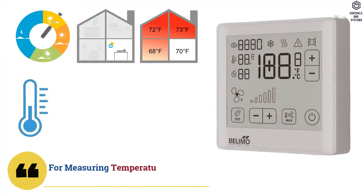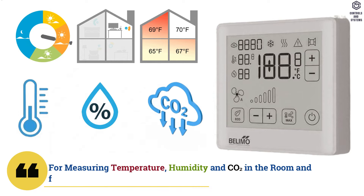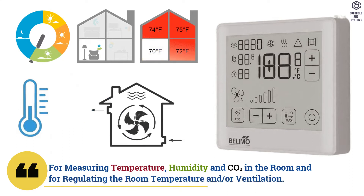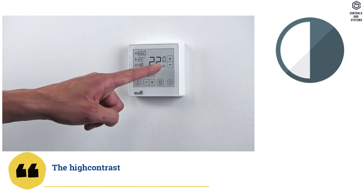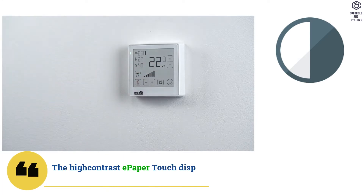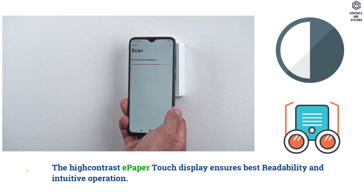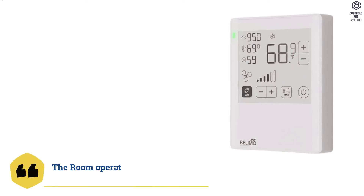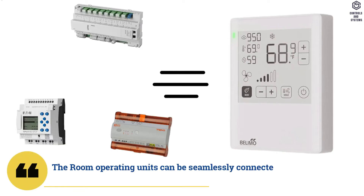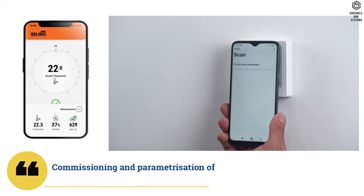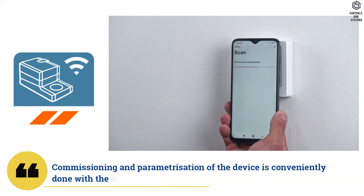The device is used for measuring temperature, humidity, and CO2 in the room, and for regulating the room temperature and ventilation. The high-contrast e-paper touch display ensures best readability and intuitive operation. The room operating units can be seamlessly connected to existing third-party controllers. Commissioning and parameterization of the device is conveniently done with the Belimo Assistant App.